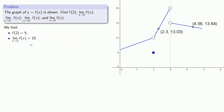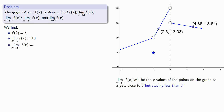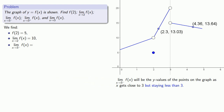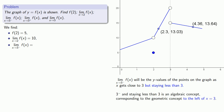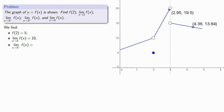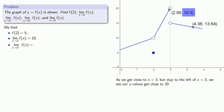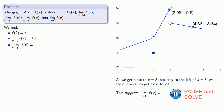The limit as x approaches 3 from below will be the y values of the points on the graph as x gets close to 3 but staying less than 3. Now, approaching 3 from below and staying less than 3 is an algebraic concept corresponding to the geometric concept of to the left of x equals 3. So let's see what happens when we approach 3 but stay to the left. As we get close to x equals 3 but stay to the left, we see our y values get close to 20. This suggests that the limit as x approaches 3 from below of f of x is equal to 20.